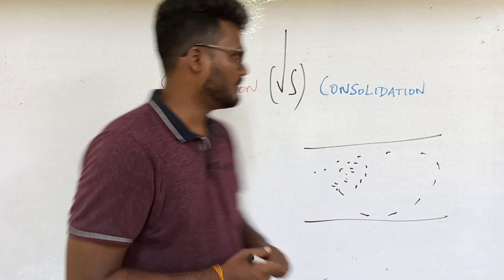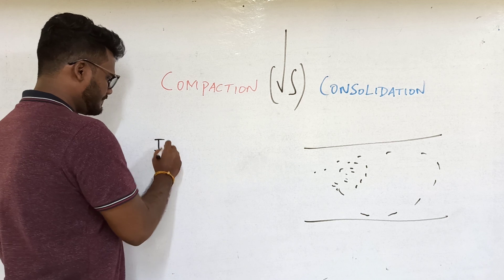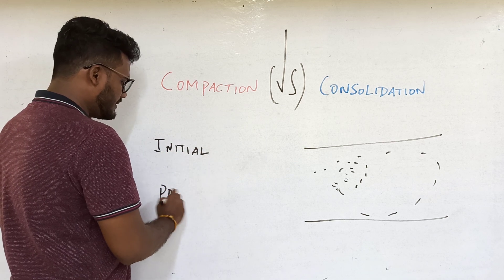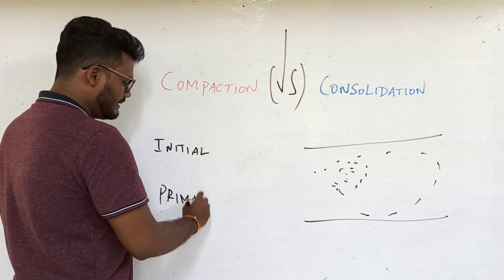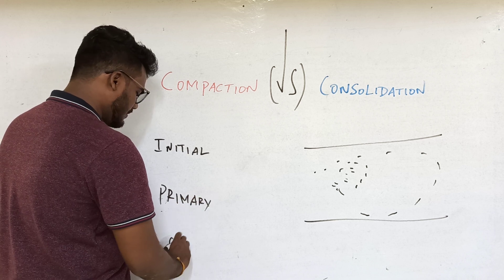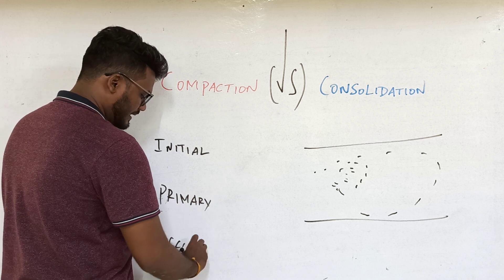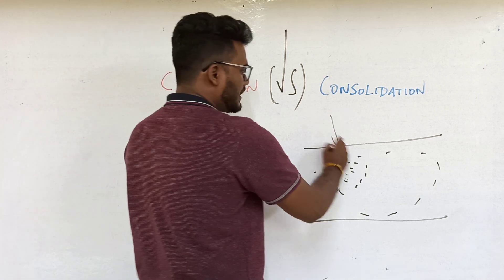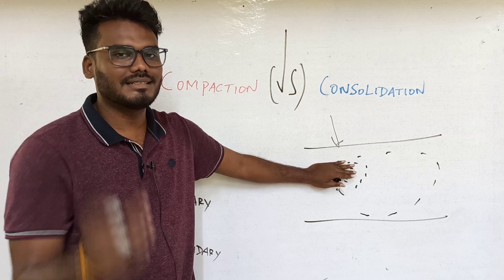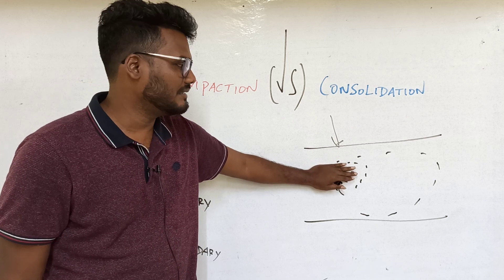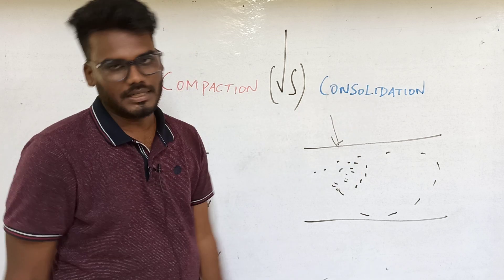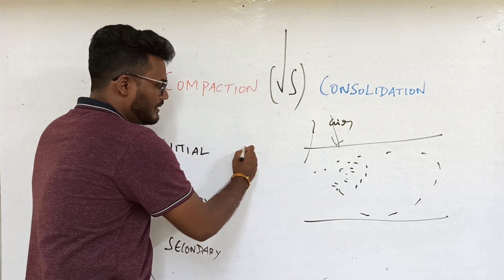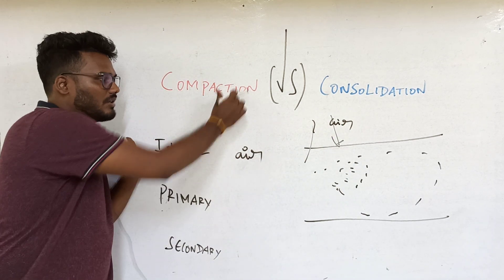But in consolidation there are three stages: initial consolidation, primary consolidation, and secondary consolidation. For clayey soil, when load is applied, within a second or within 60 seconds, air will be removed — that is the initial consolidation, analogous to compaction.